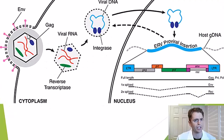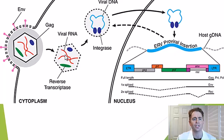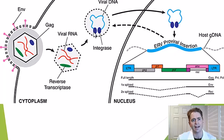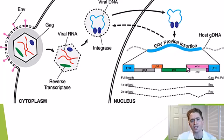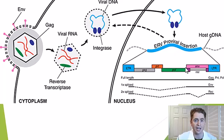This diagram shows a retrovirus entering the cell. You can see it uses the ENV, or envelope protein, which is going to be important later. Then it uses the enzyme reverse transcriptase to turn viral RNA into DNA. Then it uses the protein integrase to integrate into our genome. And then, once it's in the genome, it uses our cell's machinery to make copies of itself and spread to other cells and other locations in the genome.